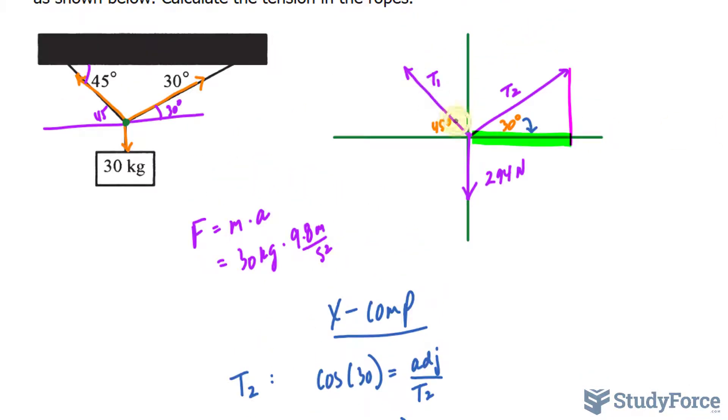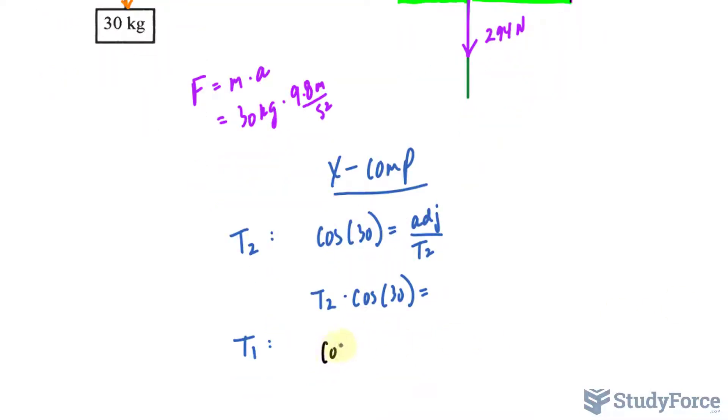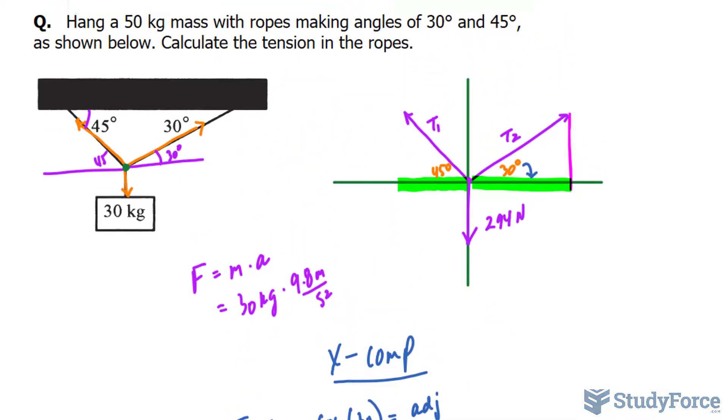If I want to find the x component for T1, this one right here, we are interested in this part that I'm highlighting. I will say cosine at an angle of 45 degrees is equal to the adjacent over T1. Again, solving for adjacent, I get T1 cosine 45 degrees. Now, something important to mention is that because I'm using cosine in the second quadrant, the x component has to be negative.